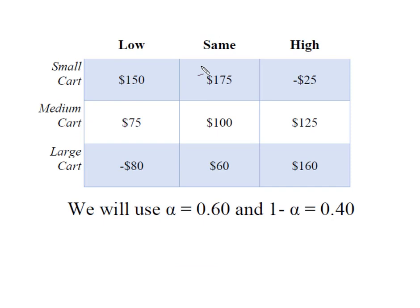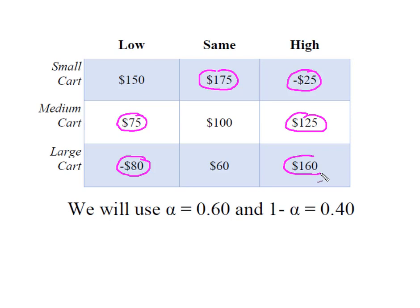For the small cart, the maximum payoff is $175 and the lowest is negative $25. For my medium cart, my lowest payoff is $75 and my highest payoff is $125. And for my large cart, my smallest payoff is negative $80 and my largest is $160. For this example, I'm going to use an alpha of 0.6 and 1 minus alpha of 0.40.